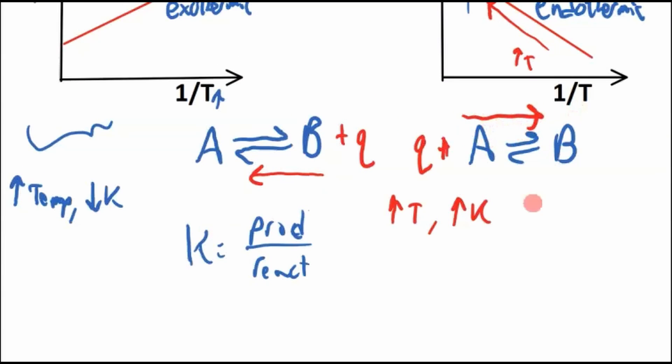And if we shift this to the right, our equilibrium constant, remember, it's products over reactants. K is going to go up because we're shifting this reaction to the right. So we're making more products and we're making less reactants, making this whole thing go up.